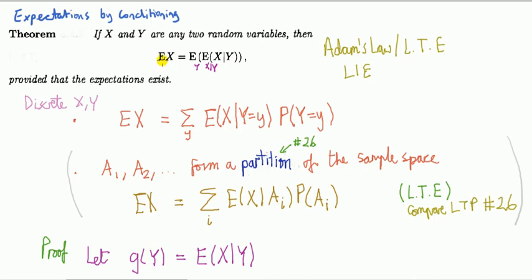If we look at this, it says if x and y are two random variables, then the mean of x is equal to a quite awkward looking expression on the right hand side, looks complicated.